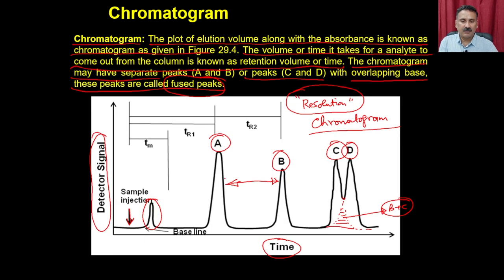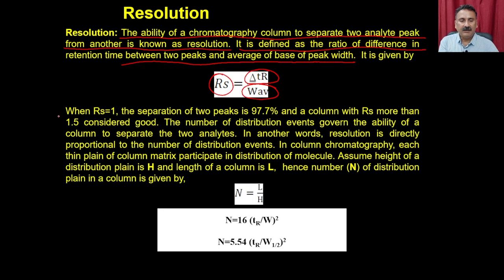Delta tR is the difference in retention time between peaks A and B. By measuring the base widths of both peaks and averaging them, you obtain the resolution of the column. When resolution equals 1, the separation of two peaks is 97.9%, and a resolution greater than 1.5 is considered good. Resolution is directly proportional to the number of distribution events.